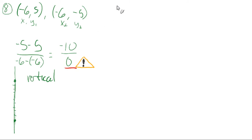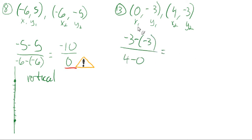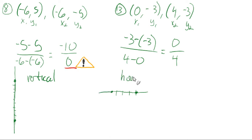Problem 13: the two points are (0, −3) and (4, −3). Slope = (−3 − (−3))/(4 − 0) = 0/4 = 0. A slope of zero means no vertical change — the rise is 0 — so the line is horizontal. To summarize: positive slopes rise, negative slopes fall, undefined slopes give vertical lines, and zero slopes give horizontal lines.